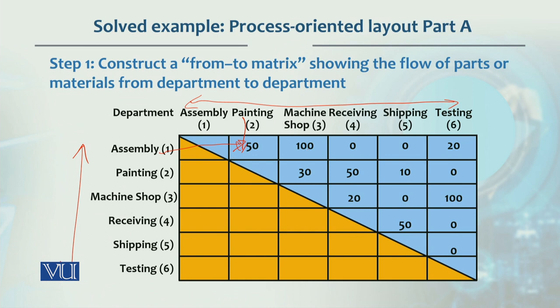Assembly and machine shop movement is 100. There is no movement between receiving and assembly, and no movement between shipping and assembly. There are 20 movements between assembly and testing. This matrix shows the combined bidirectional flow between departments over the same time period.